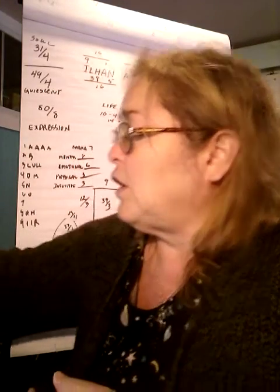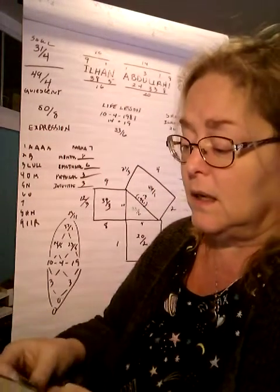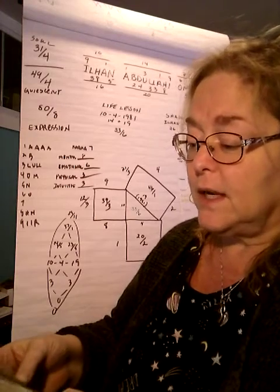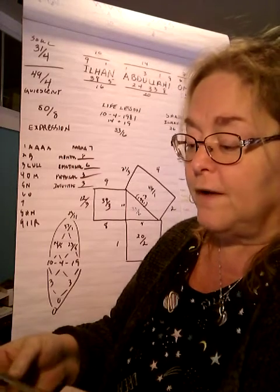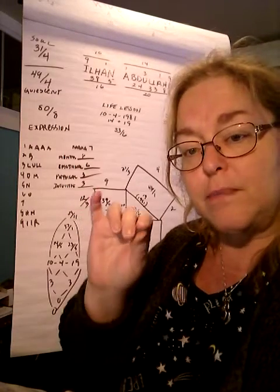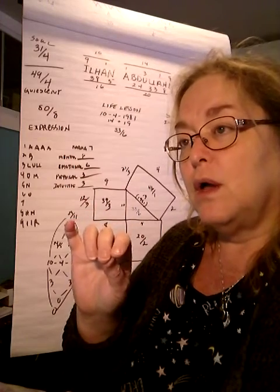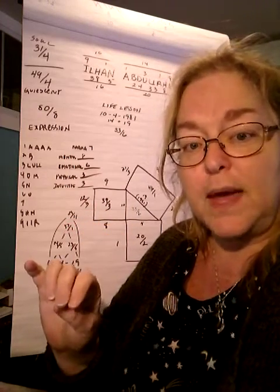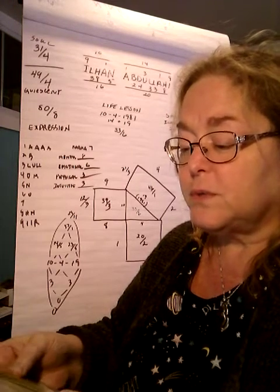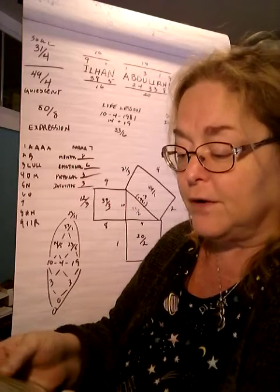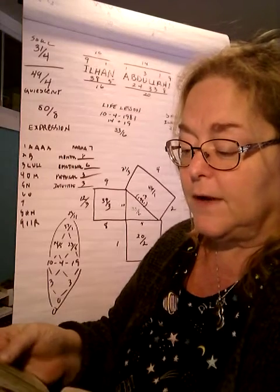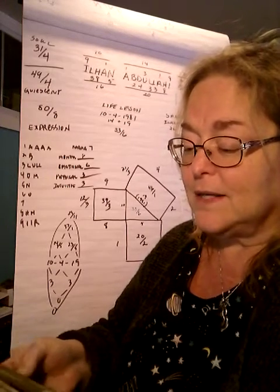Her inner self, the soul vibration, the inner feminine is a 31/4 vibration, which is actually a fire vibration. And her outer personality vibration is a 49/4, which is a water vibration. And so she has fire and water, and fire and water deal with our feeling nature. When you have fire and water in your chart, you are going through a spiritual initiation of some manner.